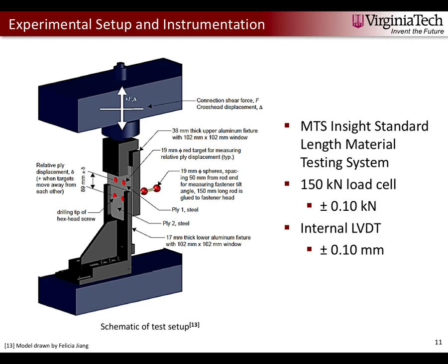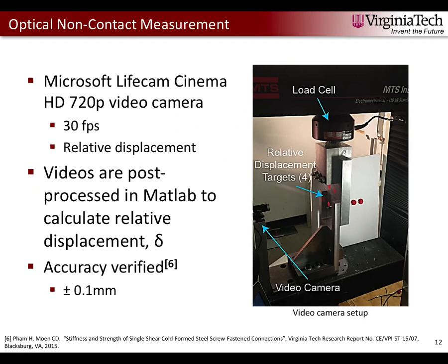We have four red sticker targets used with our non-contact measurement system to measure relative displacement delta. A Microsoft LifeCam Cinema HD 720-pixel video camera records at 30 frames per second. While the test is ongoing the camera records these targets, and after the test we post-process the videos in a custom MATLAB code to calculate delta. This MATLAB code was developed and validated by a previous Virginia Tech student and has an accuracy of 0.1 millimeters.